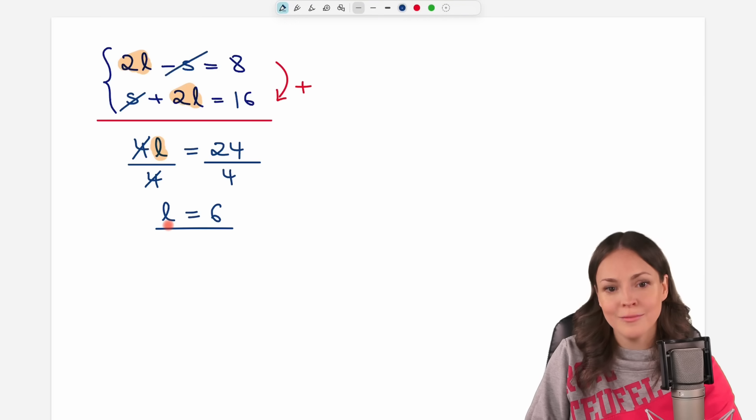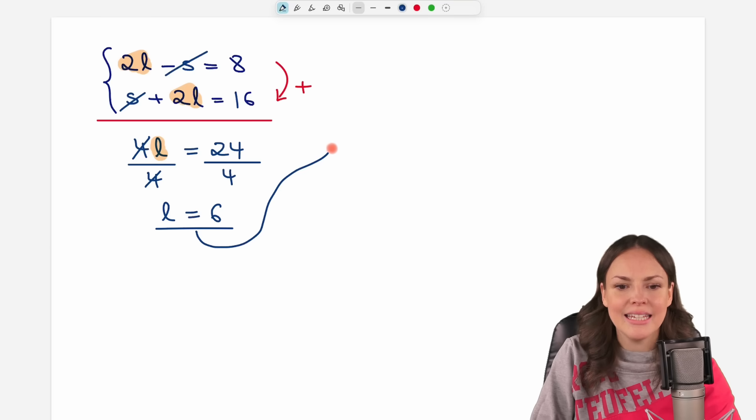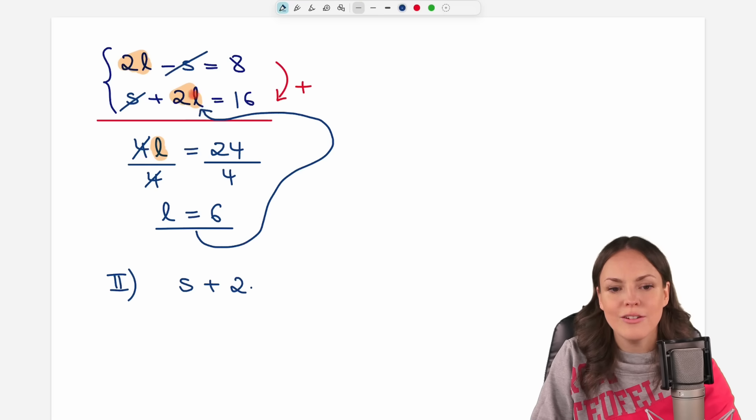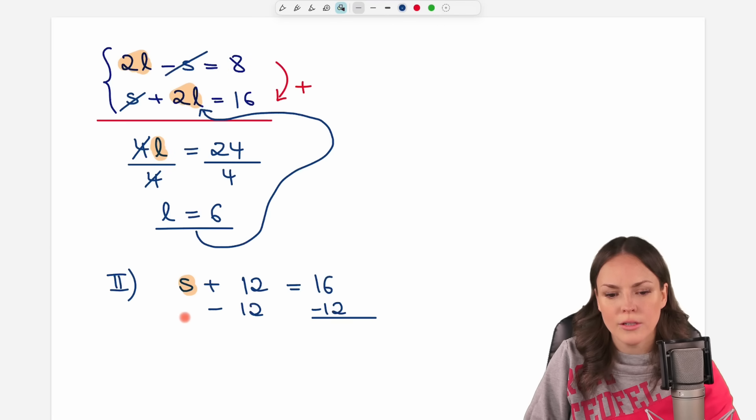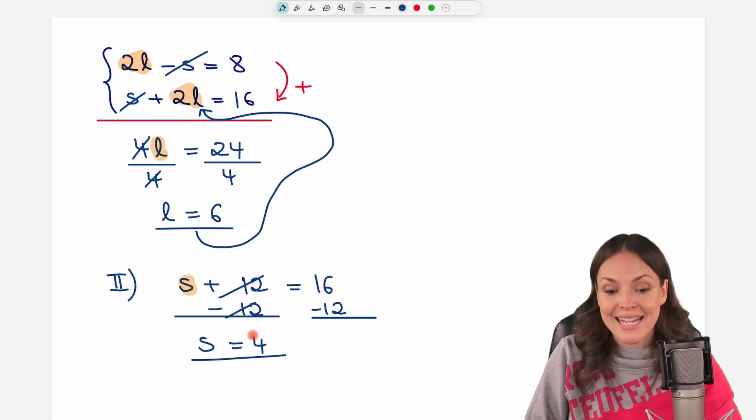The long side of our rectangle is of length 6. But we also need the short side. So let's take the L and insert it here into the second equation. So that we have S plus 2 times, instead of my L, I now know that it is 6. So I put in the 6 here. And this is equal to 16. We want to solve for S. 2 times 6 equals 12. And to solve for S, let's get rid of the 12 here by subtracting 12 on both sides of the equation. Then we have S here. This cancels out. And on the other side, 16 minus 12 equals 4. So the length of the short side is 4.